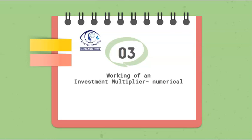Coming to question number 3, again a very important question — the working of an investment multiplier. They can ask you directly how this process works, just like credit creation in money and banking, where you have to make a table and explain it. Or they can give you a numerical based on 1 upon MPS, 1 upon 1 minus MPC, or Delta Y by Delta I.